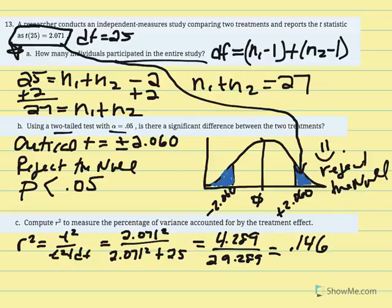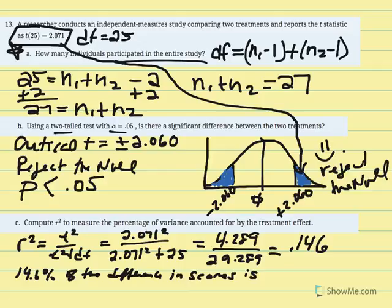Our r-squared equals 0.146, meaning 14.6% of the difference in scores is due to treatment. Even though we weren't given the sample means for this example, if we had sample mean 1 minus sample mean 2 producing a difference, we would say 14.6% of that difference is a result of the fact that they received different treatments.